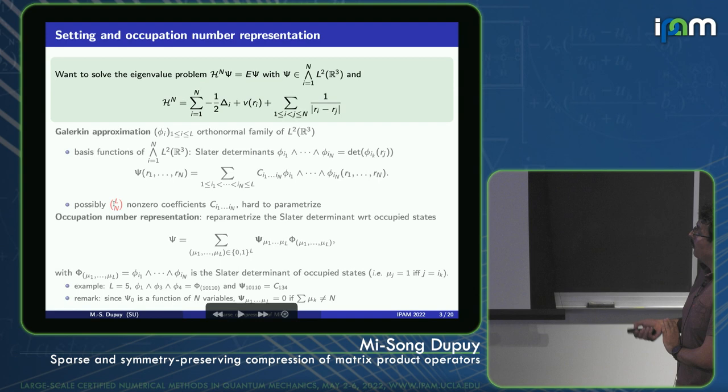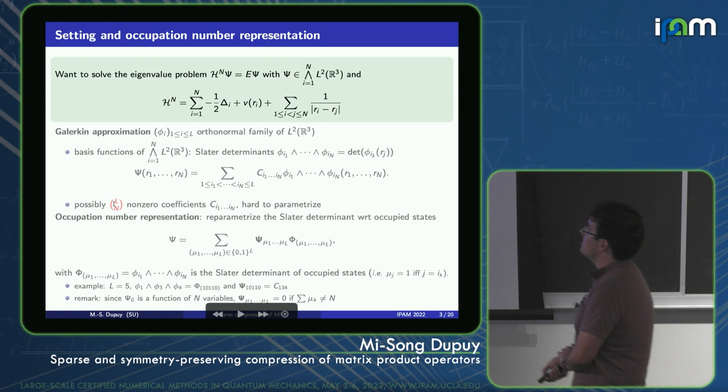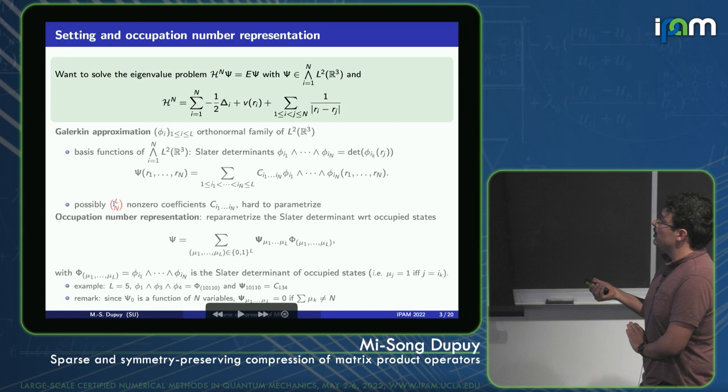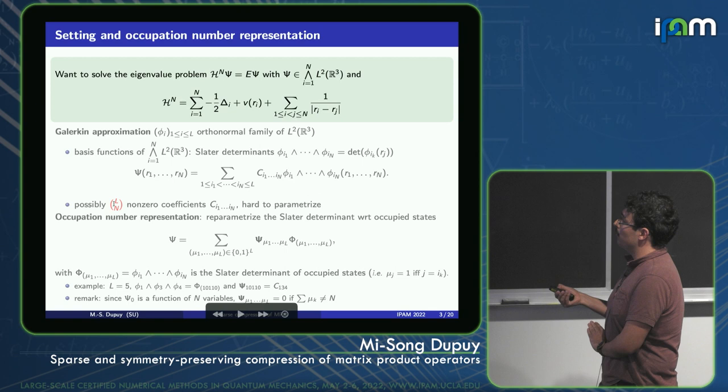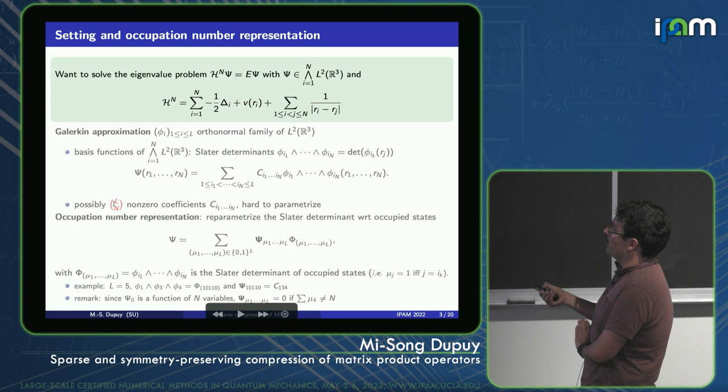What we would like to solve is the many-body Schrödinger equation — typically this eigenvalue problem where psi is an anti-symmetric function, and the many-body Schrödinger operator is the sum of a one-body operator: kinetic energy, the interaction with the nuclei, and the bi-electronic interaction, giving us a two-body Hamiltonian.